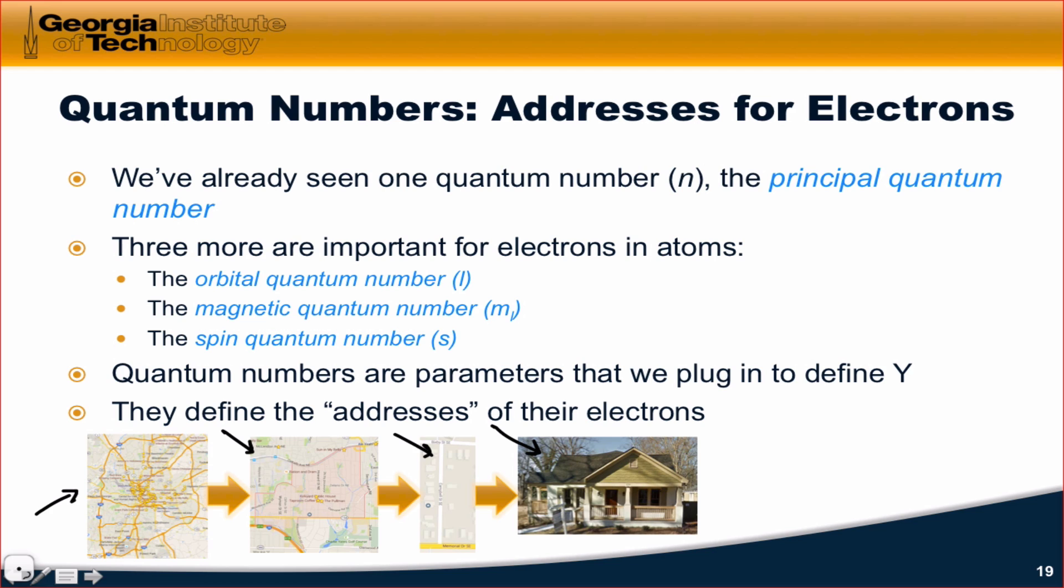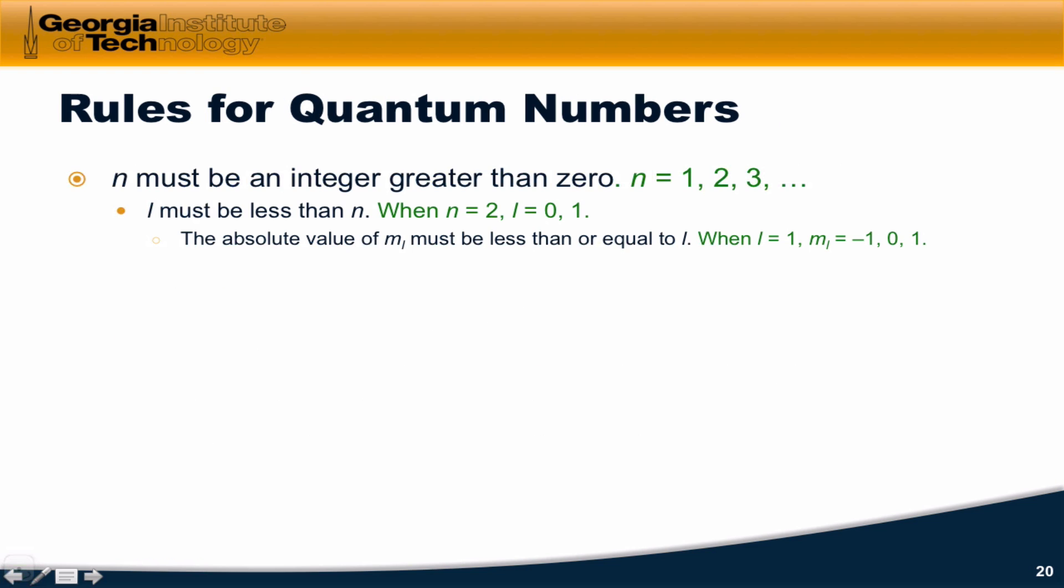within that city. And just like addresses, there are certain rules that quantum numbers must follow, right? If we fix our city as Atlanta, then we can only choose neighborhoods that are in Atlanta. We can only choose streets that are in those neighborhoods, and so on and so forth. There are rules for the quantum numbers. And here they are.